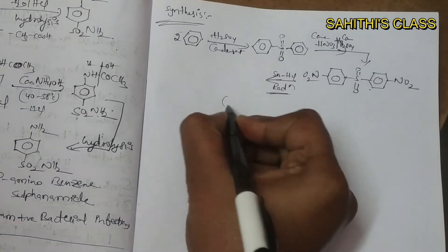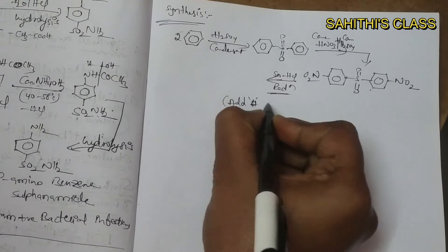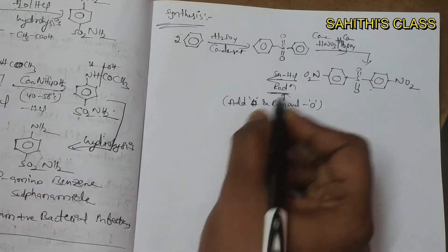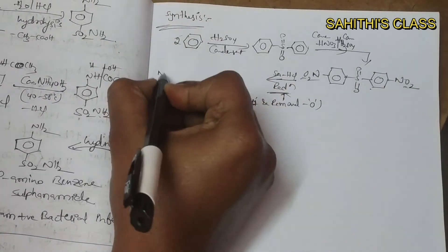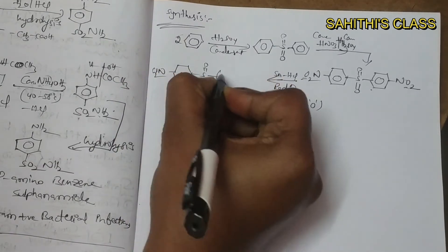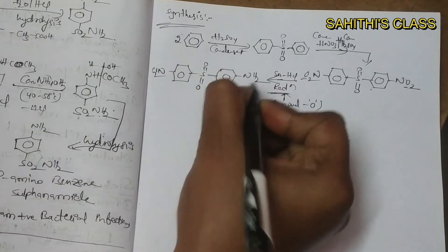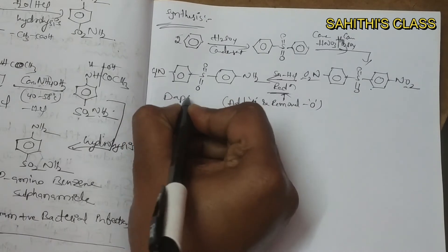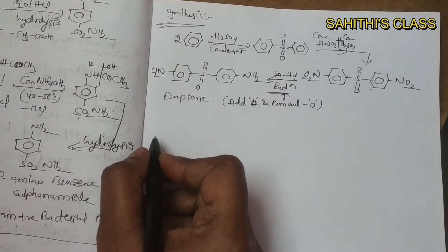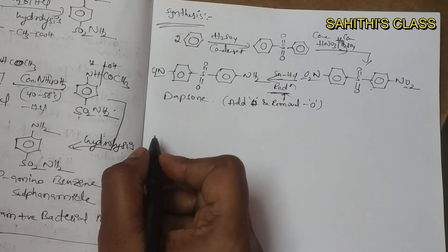Next it undergoes reduction in presence of SnHCl. Reduction means addition of hydrogens and removal of oxygen. It is a very simple synthesis. So this is dapsone. Finally we get dapsone. This is the synthesis of dapsone. It exhibits an antibacterial spectrum and mechanism of action similar to that of sulfonamide. So it is the drug of choice in the chemotherapy of leprosy.